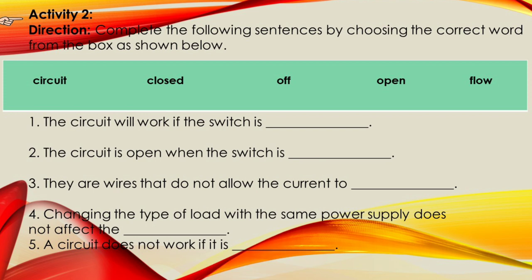Let us check your answers. 1. The circuit will work if the switch is closed. 2. The circuit is open when the switch is off. 3. They are wires that do not allow the current to flow. 4. Changing the type of load with the same power supply does not affect the circuit. 5. A circuit does not work if it is open. If you got it right, high five!